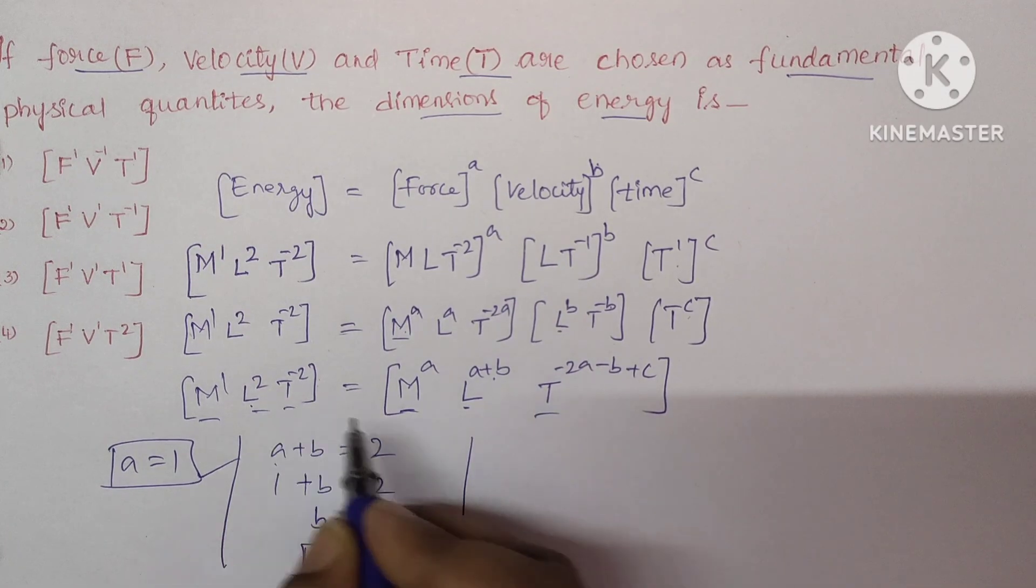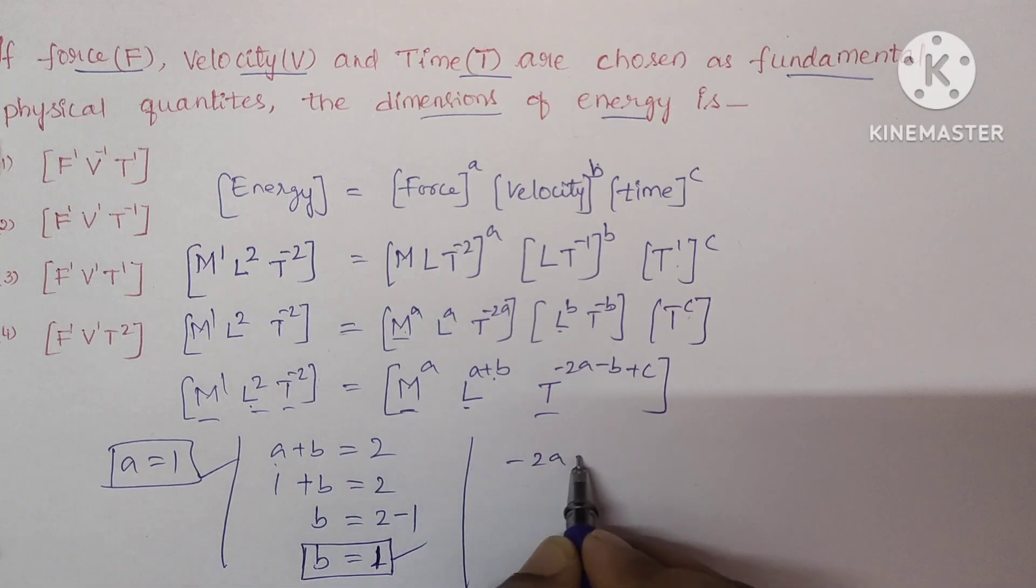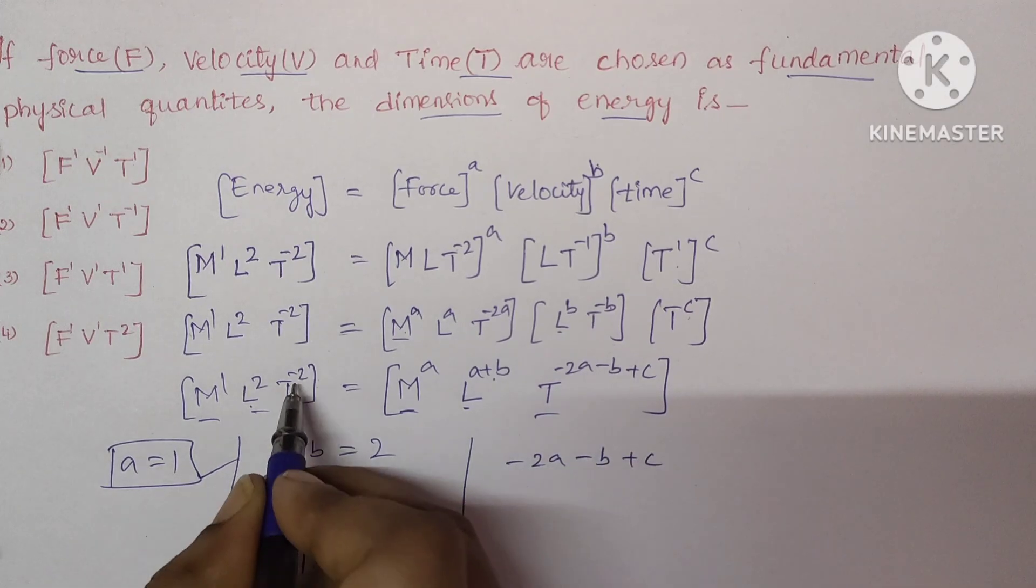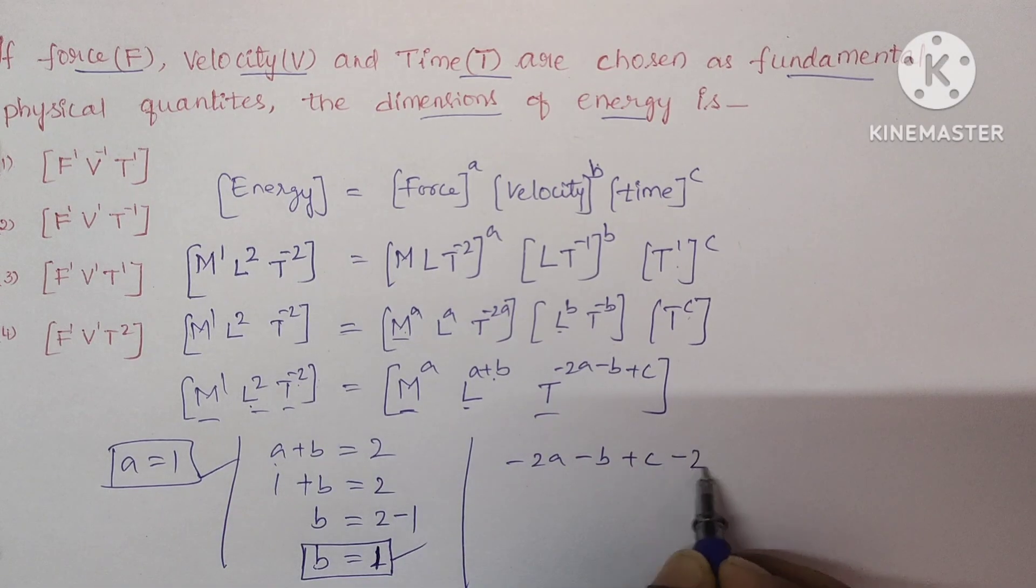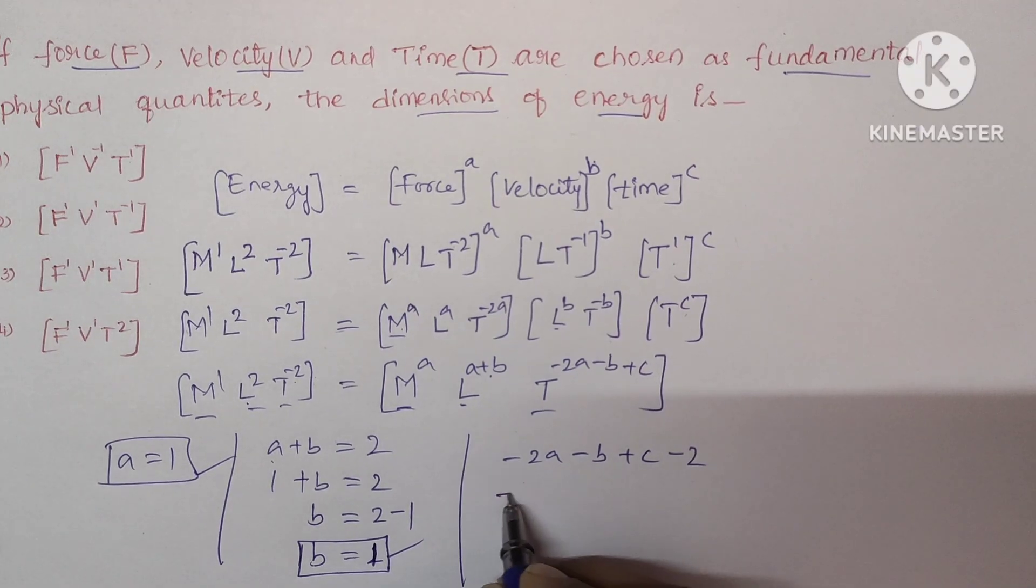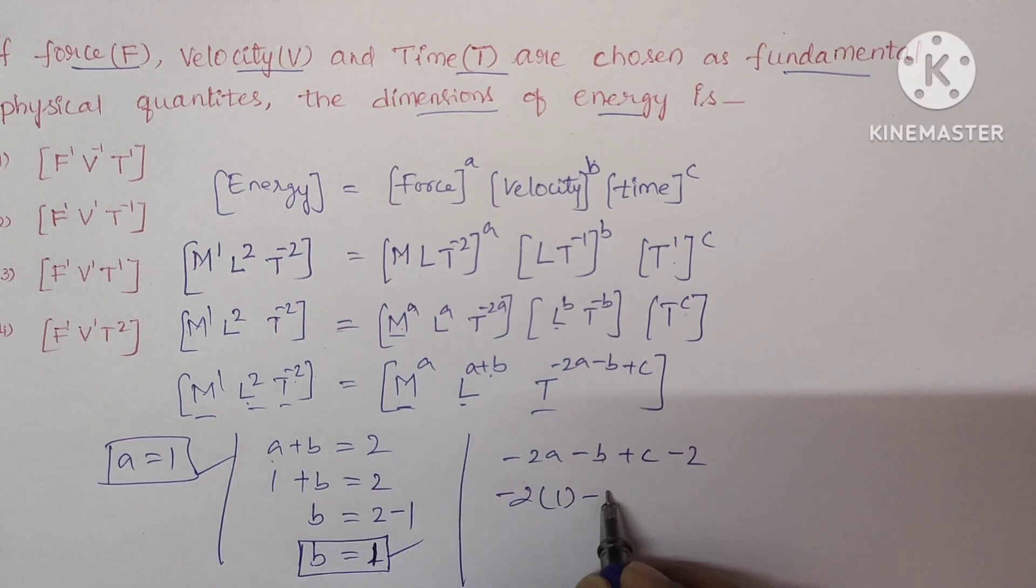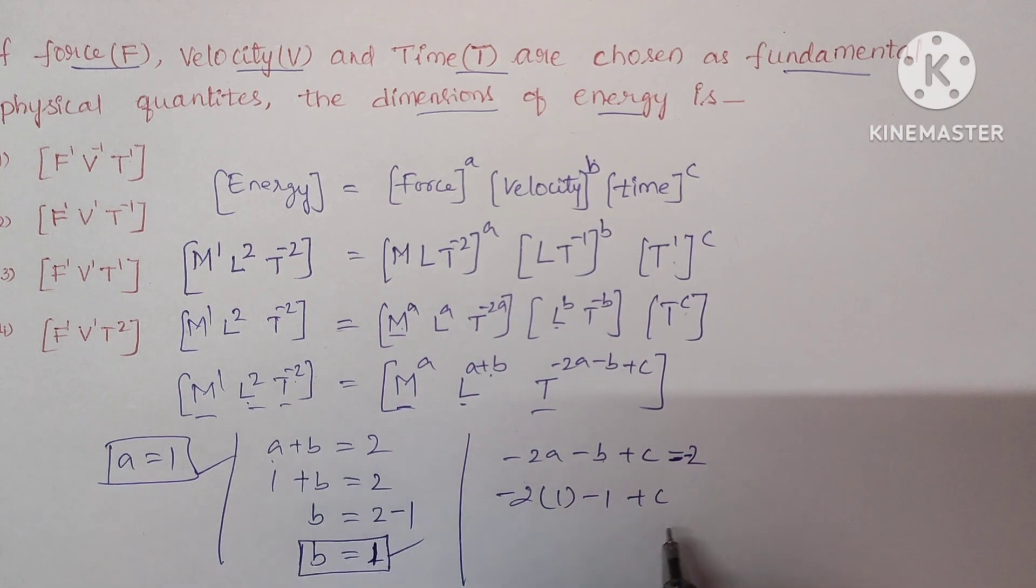Now let us compare for the time term. Here it is minus 2A minus B plus C equal to, here it is minus 2. So minus 2, A value is 1 minus B value is 1 plus C equal to minus 2 here, sorry.